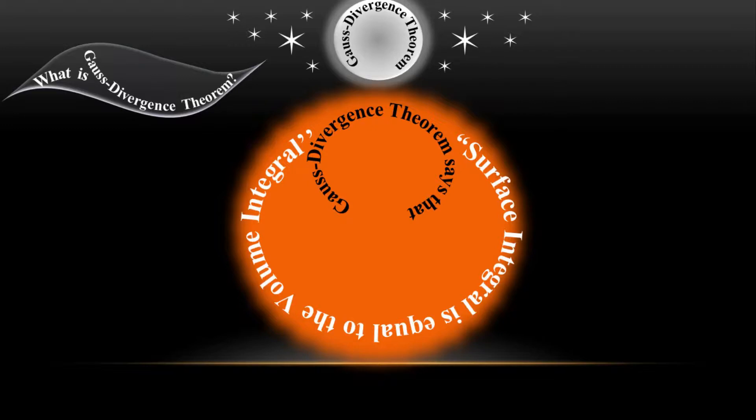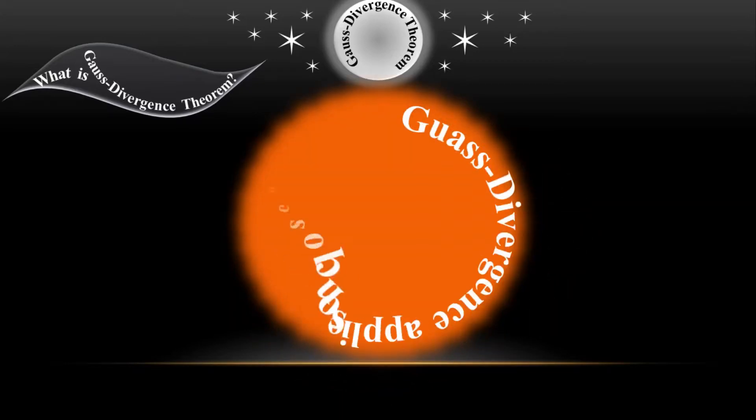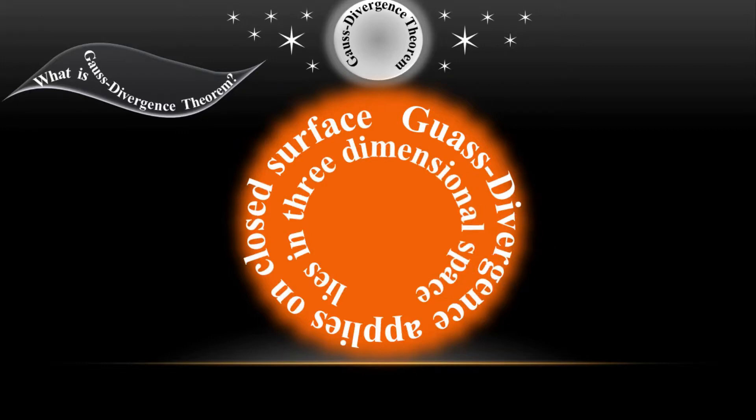You can see here that Gauss Divergence Theorem defines the relation between surface integration and volume integration, which means that if I take the surface integration of an object it equals to the volume integration of that object. But there is one important point that you must keep in mind: Gauss Divergence Theorem applies on closed surfaces lying in three-dimensional space.